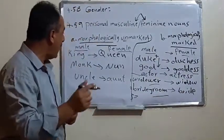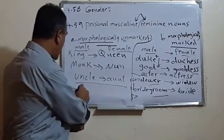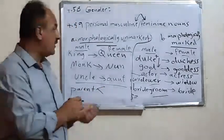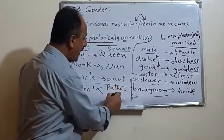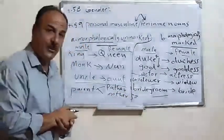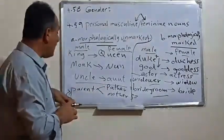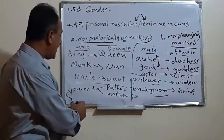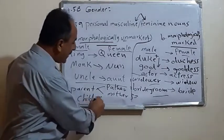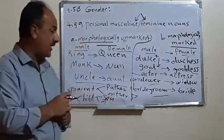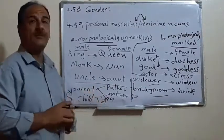One final point concerns words we call common gender, especially in kinship relations. The word 'parent' can refer to either a father or a mother. Likewise, the word 'child' can refer to either a son or a daughter. So these words — 'parent' and 'child' — can be male or female.